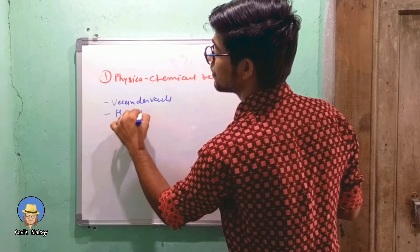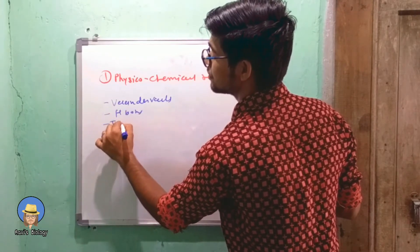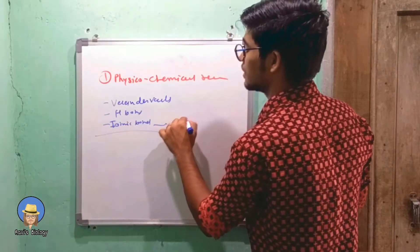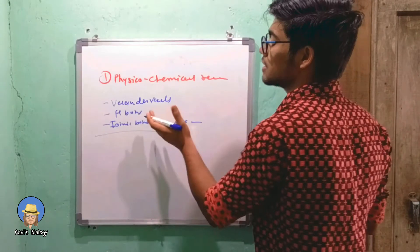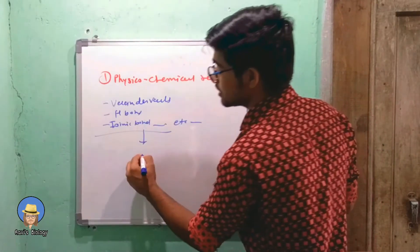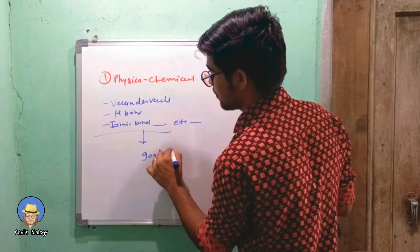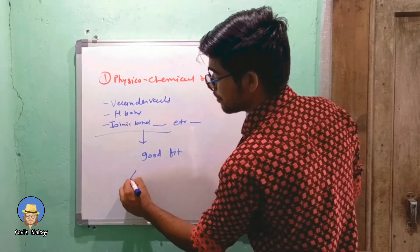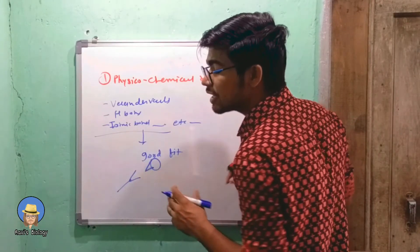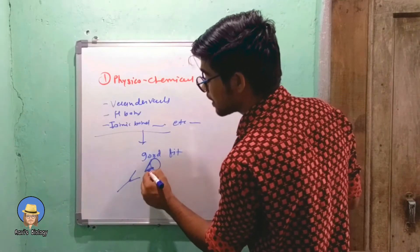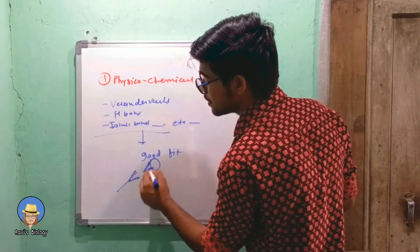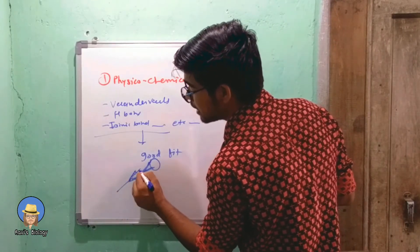...like hydrogen bonds, ionic bonds, etc., take part in this reaction. The bonding is based on good fit. For example, this is antibody, this is antigen. If it binds very tightly and quickly, the good fit is very well and bonding is very tight.